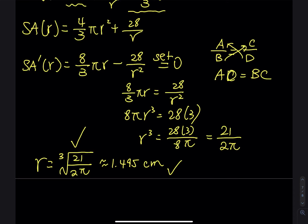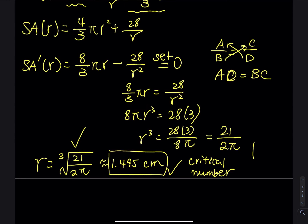This value is a critical number. Since we are looking for a minimum surface area, we apply the second derivative test. For a minimum, the second derivative at the critical point must be positive — indicating concave up. Let's take the second derivative.